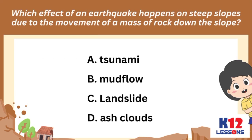Which effect of an earthquake happens on steep slopes due to the movement of a massive rock down the slope? A. Tsunami, B. Mudflow, C. Landslide, D. Ash clouds.